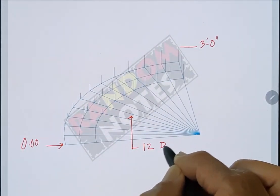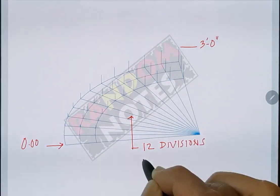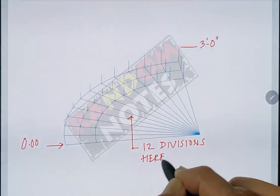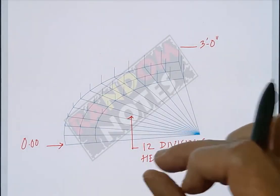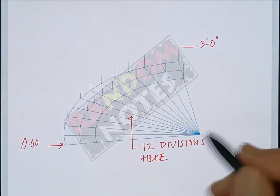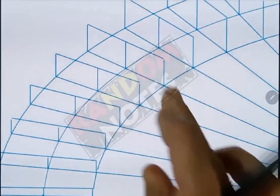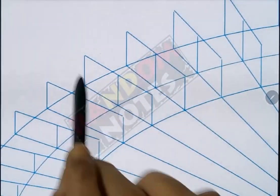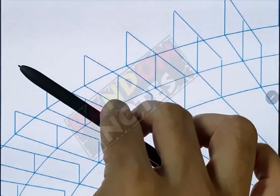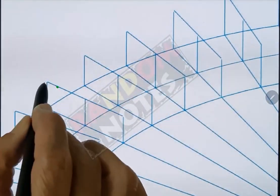If you make more number of divisions, the ramp surface will be smoother. Let us join the top of each set of verticals to make a frame like this. The line on top is perfectly horizontal since it joins the lines of same height. So this green line is perfectly horizontal.